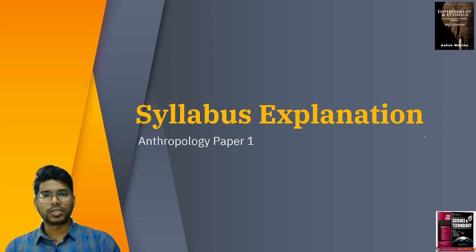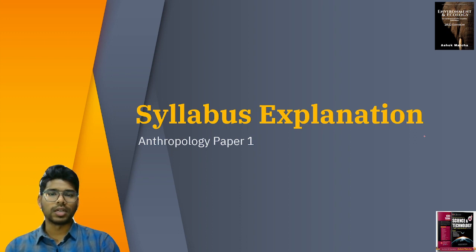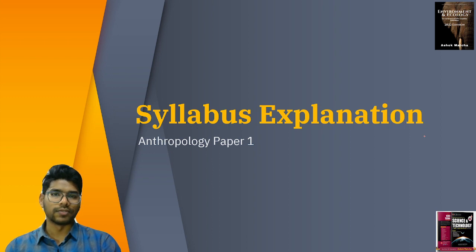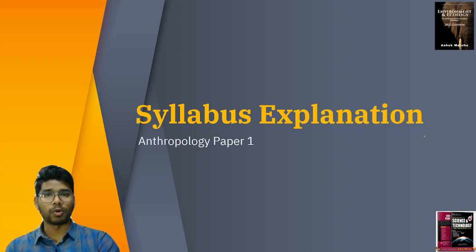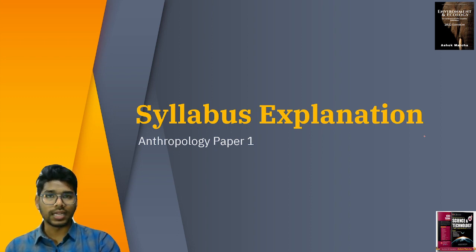So let's go to the syllabus explanation. Anthropology paper one. As you might be aware, every optional is divided into two parts, paper one and paper two, comprising about 250 marks each, so the optional encompasses 500 marks total. The optional makes the difference — choose wisely. In recent times, the anthropology optional was chosen by most aspirants because of limited syllabus, ease of understanding, and very high scoring potential.